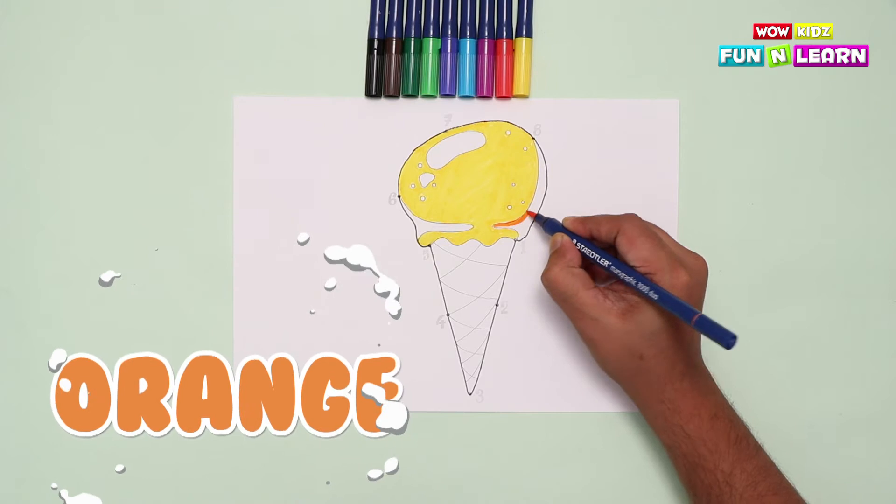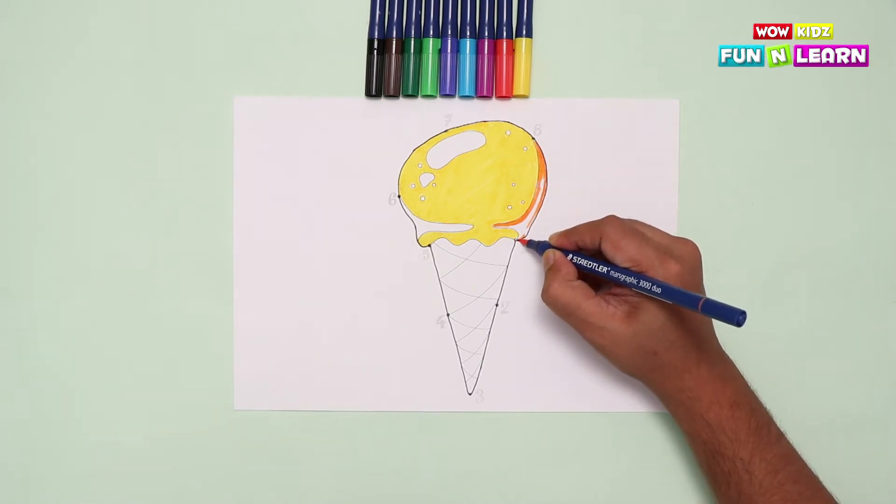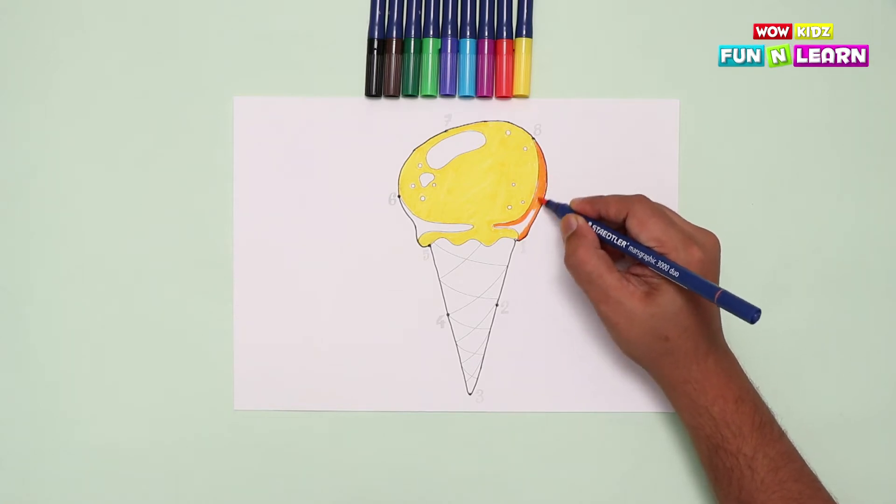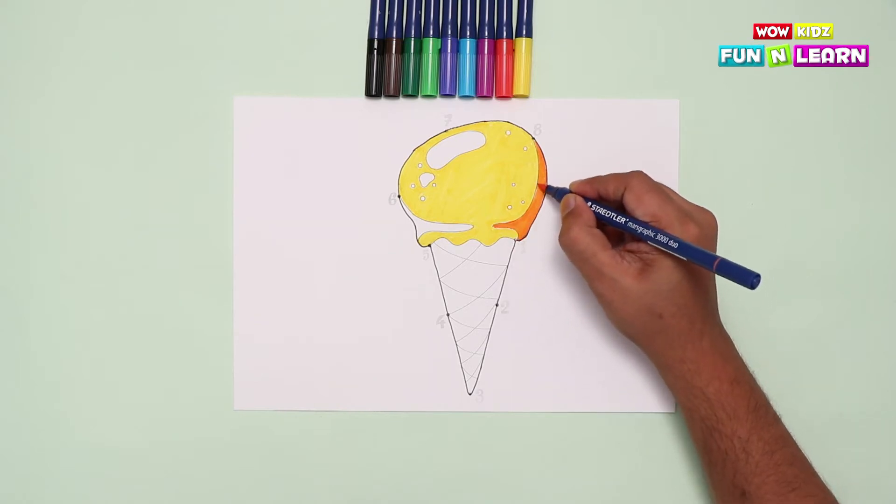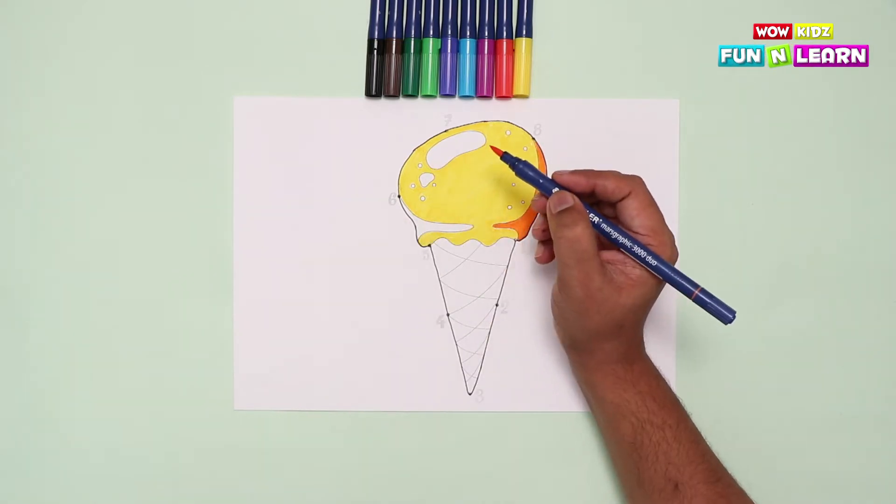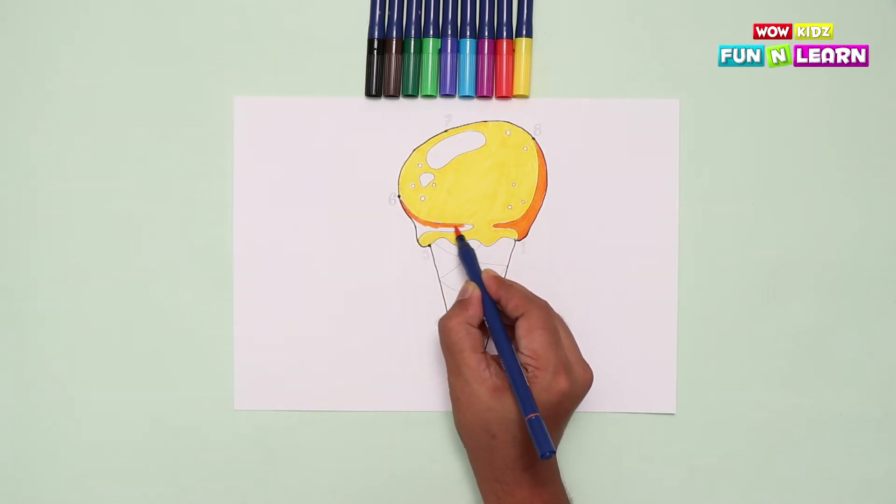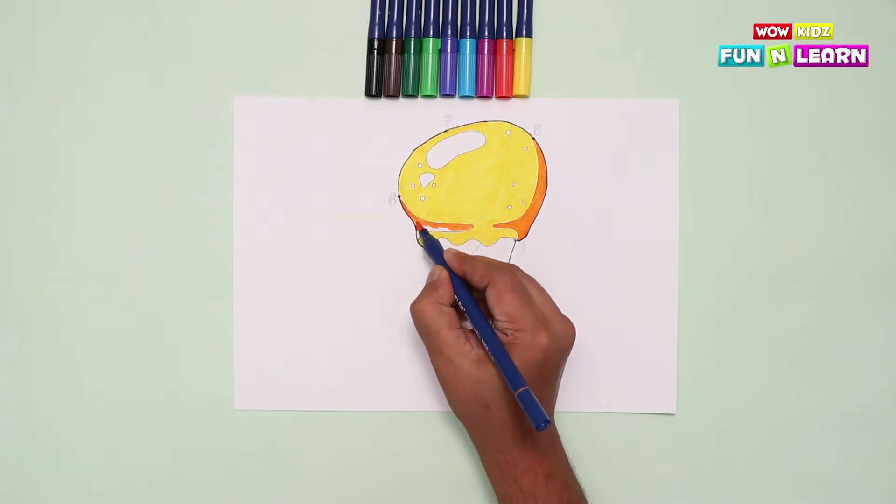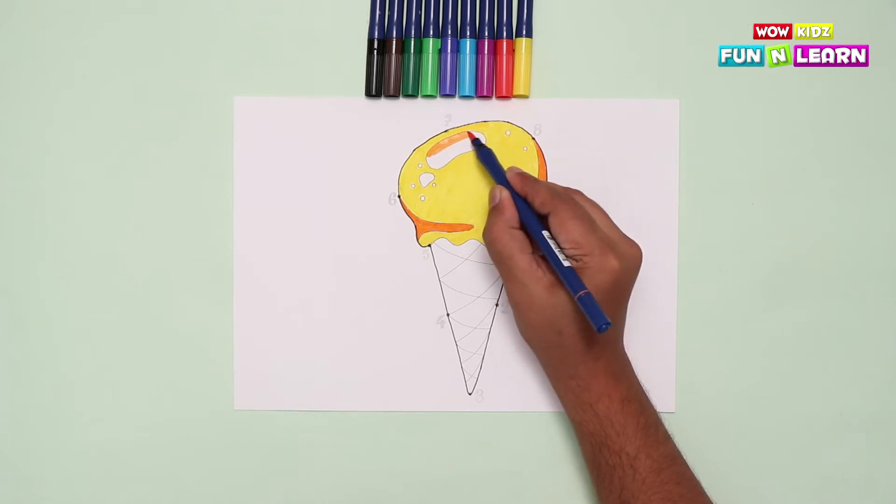Now we pick up another color to add a flavor to the ice cream scoop. Fill it in here. And this way. Now we're gonna color these sections. They are the fruit chunks. The best part in the ice cream.